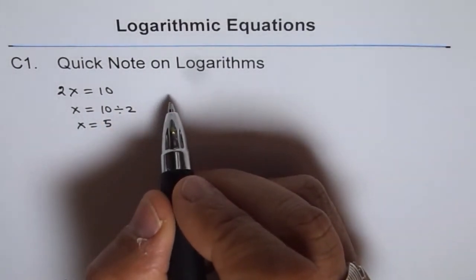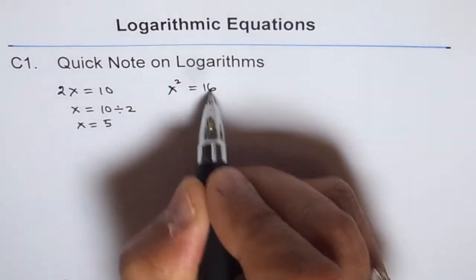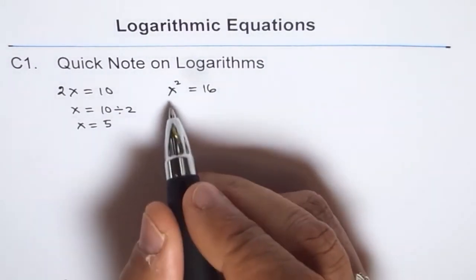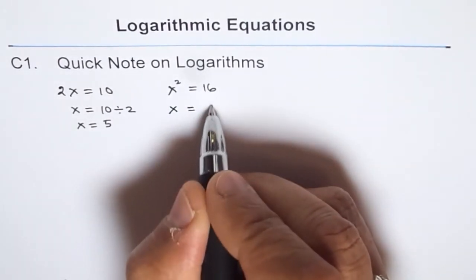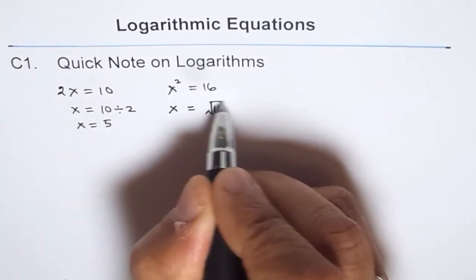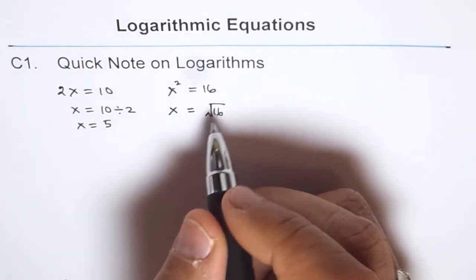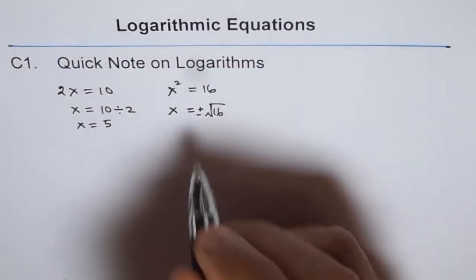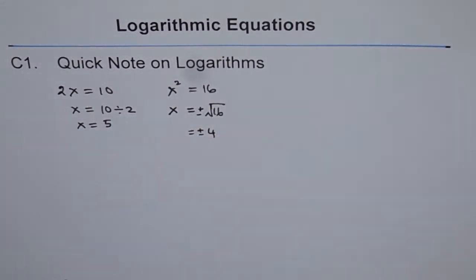If we have x squared equals 16 and want to find x, you know x should be the square root of 16. Whenever you do a square root, you do plus and minus, because both will give you the answer. So you get x equals plus or minus 4. You know exactly what to do to get the answer.